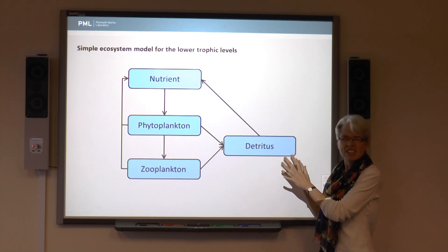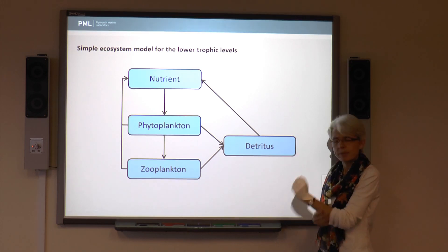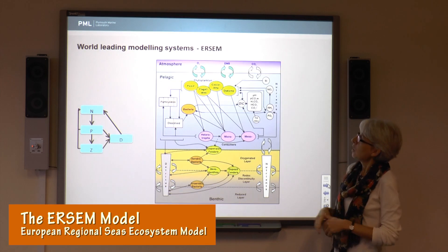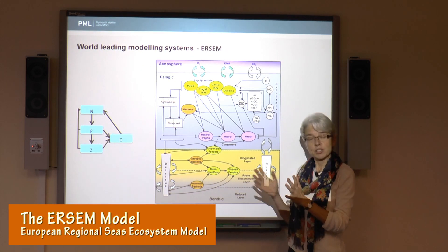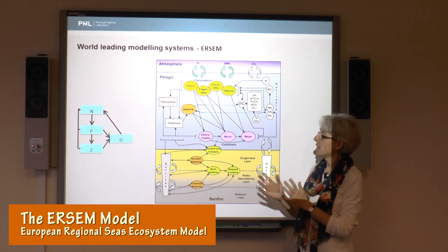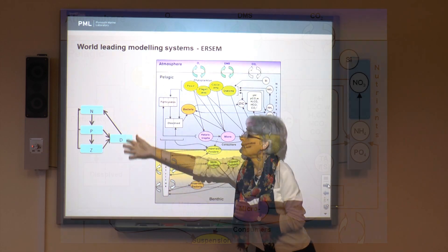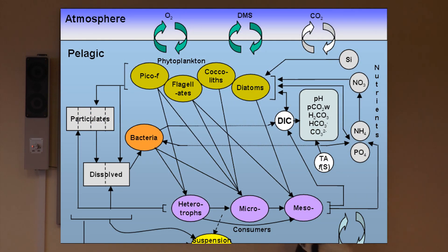This is a very simple model — there's only a limited number of questions we can ask it. At PML, we found it's useful to extend our model a bit so we can do more things with it. Moving forward from our very simple NPZD model, we put in some extra phytoplankton. We've got four types here, which represent the vast number of different species of phytoplankton — four different ways of life of phytoplankton, if you like.